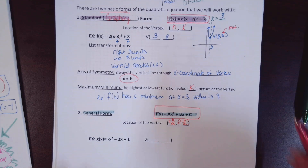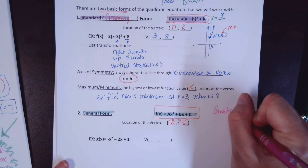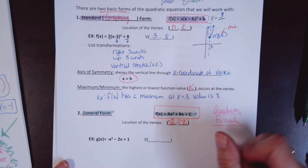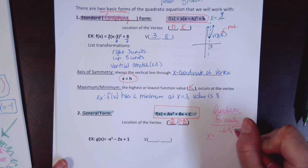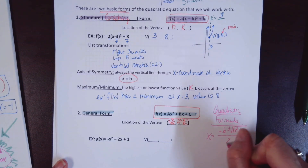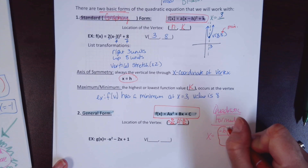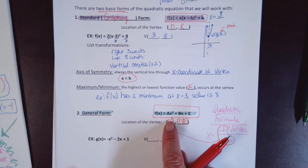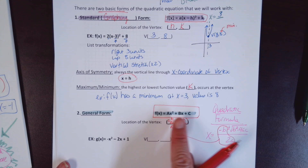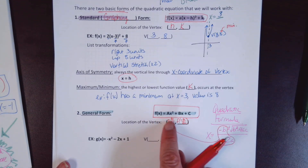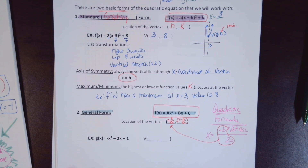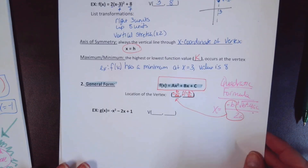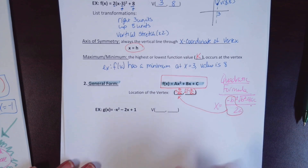Let's connect this to the quadratic formula: x = (−b ± √(b² − 4ac)) / 2a. The −b/(2a) part gives the x-coordinate of the vertex. The discriminant b² − 4ac tells us how many and what kind of solutions to expect. The −b/(2a) portion on its own helps us find the vertex of the parabola.